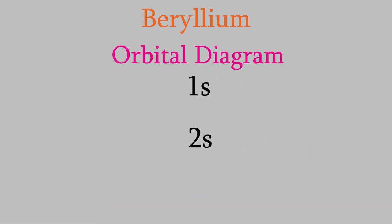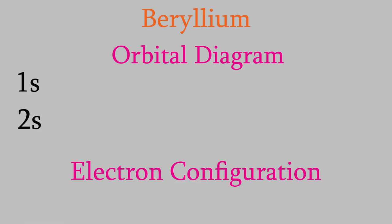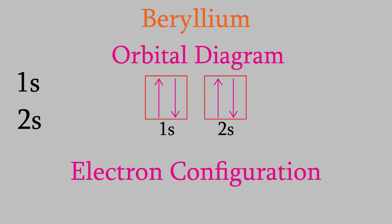So now we know the quantum numbers of each electron in a beryllium atom and can draw the orbital diagram and electron configuration. For the orbital diagram, we draw a box for each orbital and write its name below. We have two orbitals, so we draw two boxes labeled 1s and 2s. There are two electrons in each orbital with opposite spins, so we put two arrows — one up and one down — in each box. It would be wrong to draw two up arrows or two down arrows, because that would violate the Pauli exclusion principle.